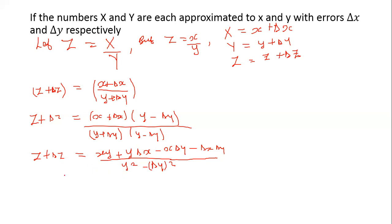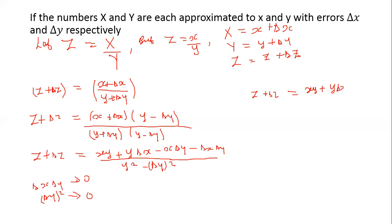Since delta x and delta y are very small, the product delta x·delta y tends to zero, and delta y squared also tends to zero. So z plus delta z becomes equal to xy plus y·delta x minus x·delta y, all divided by y squared.